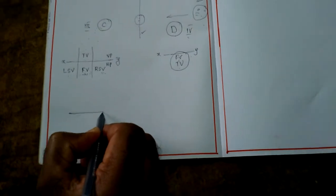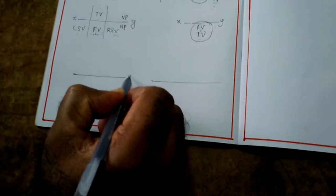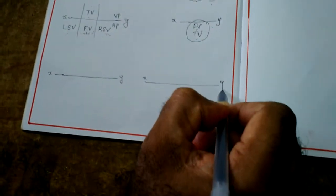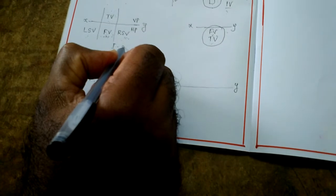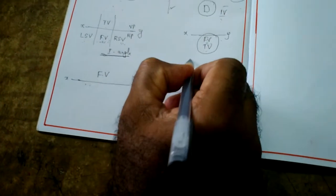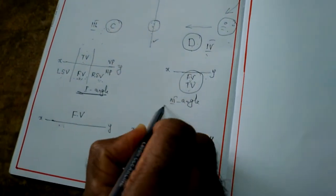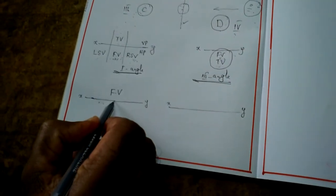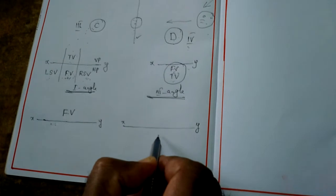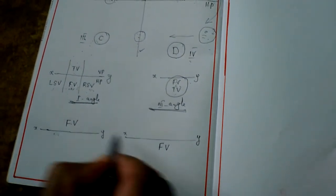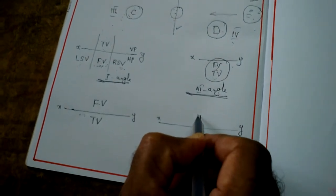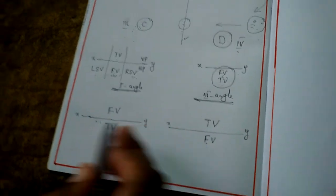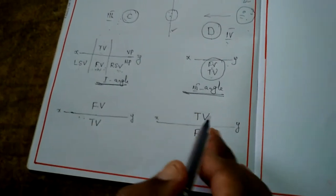Let's summarize first angle and third angle once again. The XY line is the reference line. In first angle projection method, the front view occupies above the XY line. In third angle projection method, the front view occupies below the XY line. These two are reversed. Similarly, in first angle, the top view occupies below the XY line, but in third angle projection method, the top view occupies above the XY line. These two are also reversed — so don't get confused, because confusion will make your problem solving absolutely wrong.